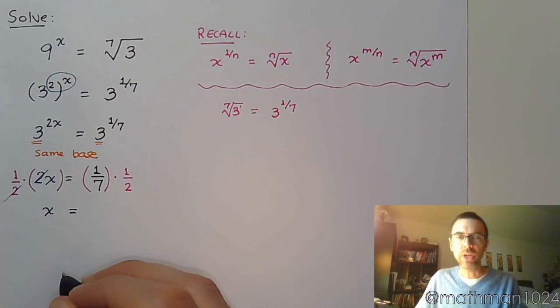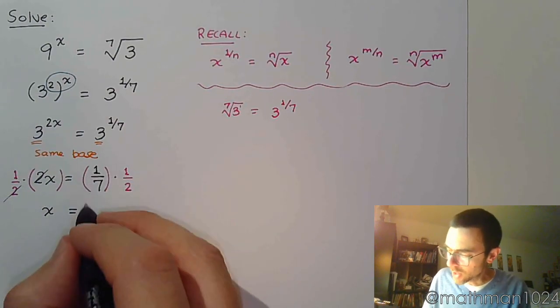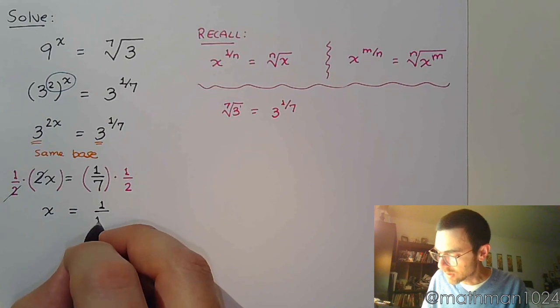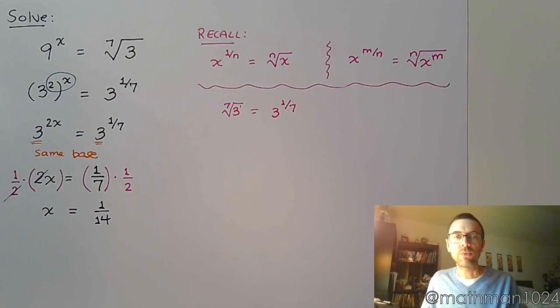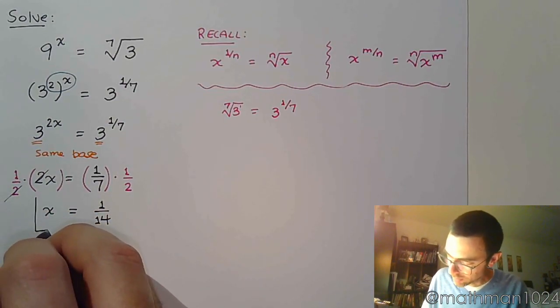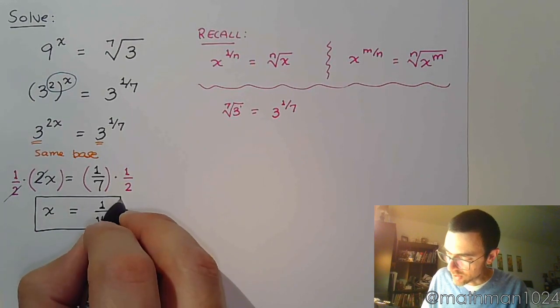Those reduce. X equals, and now you have the product of two fractions. And to multiply two fractions, you multiply the numerators to get 1, multiply the denominators to get 14. And that's our answer.